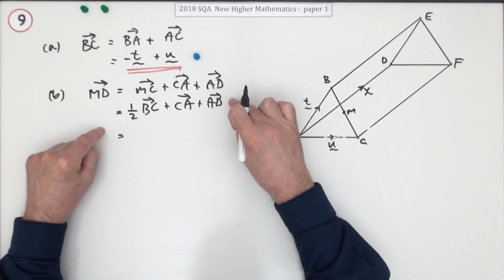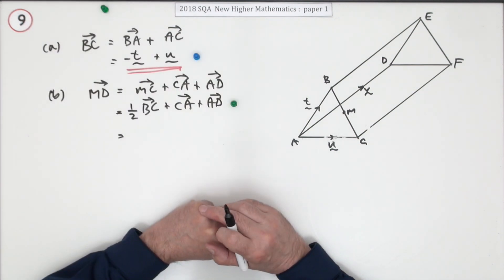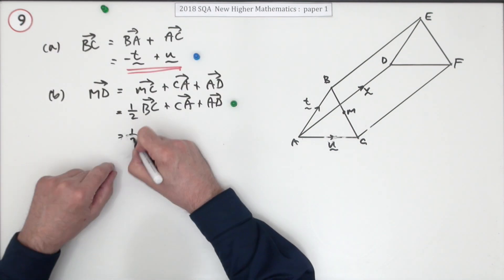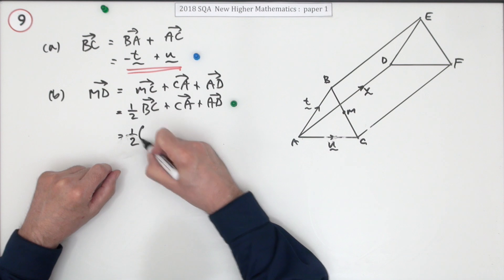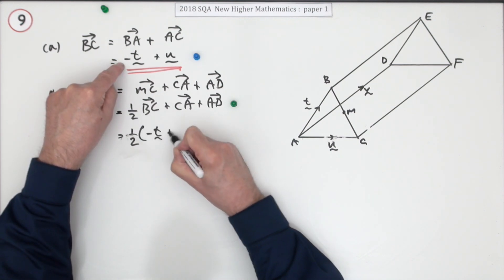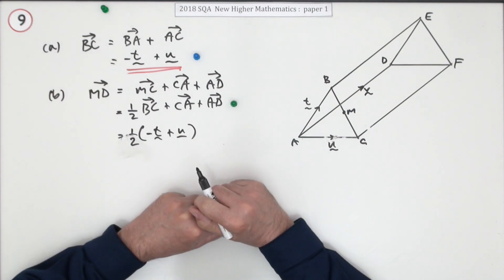Now, finding an appropriate pathway was one mark. Another mark's just for putting in the bits and pieces. So BC was those two parts, negative T plus U, or you could put U minus T.